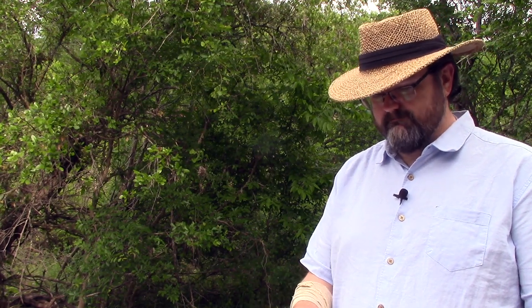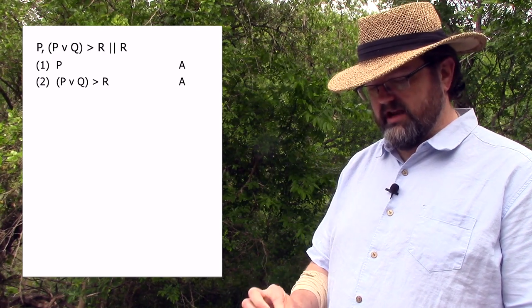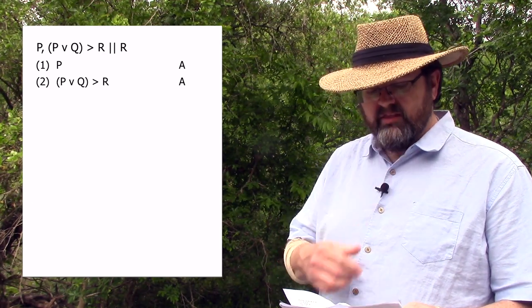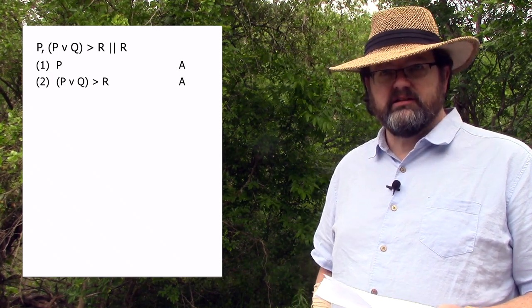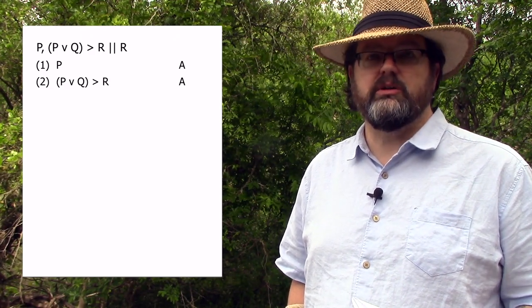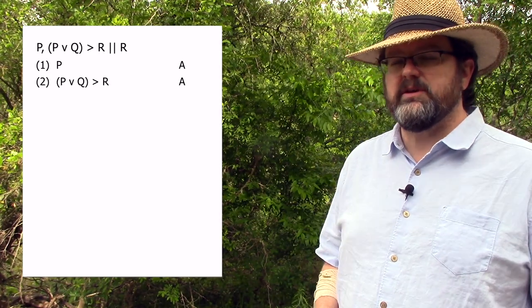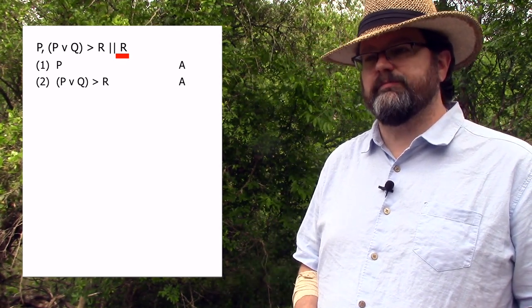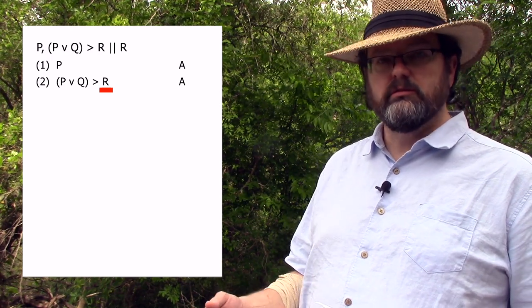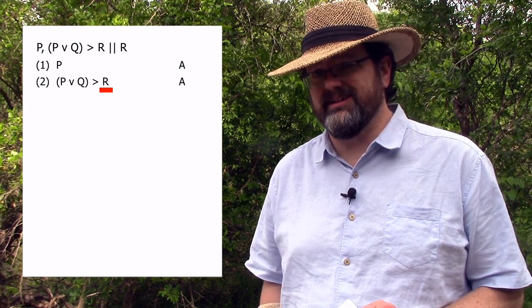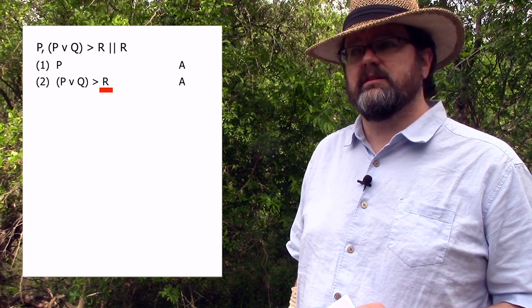Let's try a couple of problems. We have the assertion of P as the first line, and the conditional 'if P or Q, then R' as the second line, and we're trying to infer R. Look at the conclusion R — it's the consequent of a conditional, so chances are we're going to use modus ponens to get that consequent out. But the antecedent P or Q does not appear as a premise by itself.